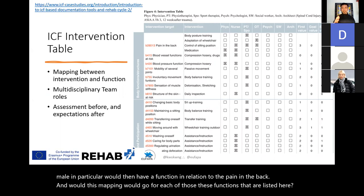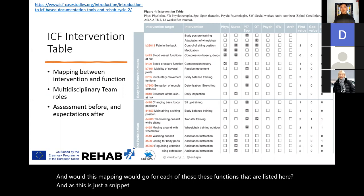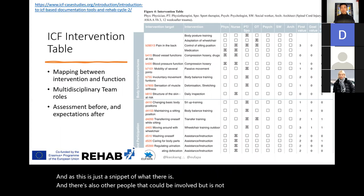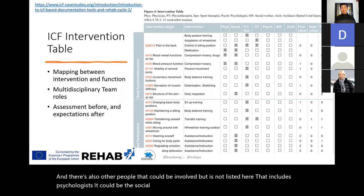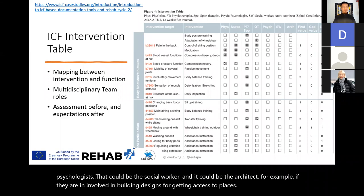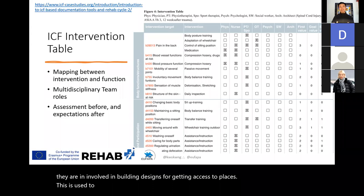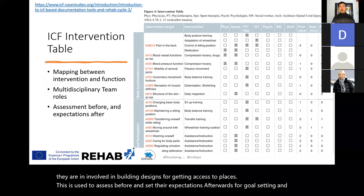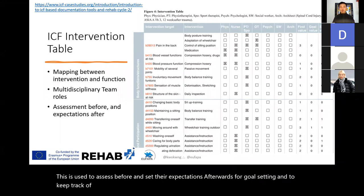This is just a snippet of what there is; other people could also be involved and not listed here — including a psychologist, a social worker, or an architect involved in building designs for getting access to places. This is used to assess before and set the expectations afterwards for goal setting, and to keep track of who needs to do what and for whom.